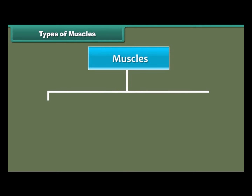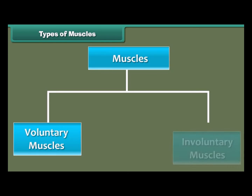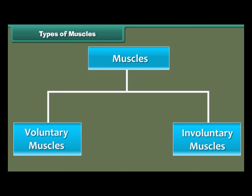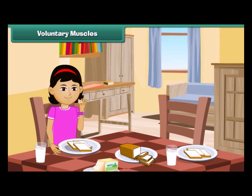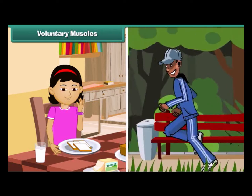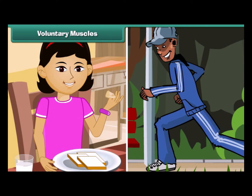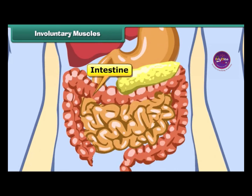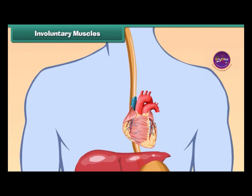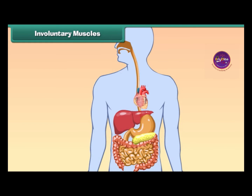According to the nature of their functions, muscles are of two types: voluntary muscles and involuntary muscles. Some actions are performed whenever we wish, like eating, walking, etc. We can start or stop these actions whenever we want. Muscles that carry out these actions according to our wishes or volition are called voluntary muscles, and their movements are called voluntary movements. Our arms and legs contain voluntary muscles. The functions of the stomach, intestines, and heart go on in a fixed manner, not dependent on our wishes. Such muscles are called involuntary muscles, and their movements are called involuntary movements.